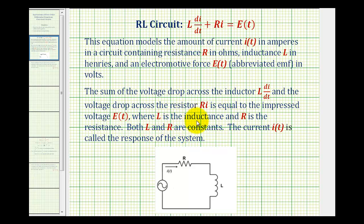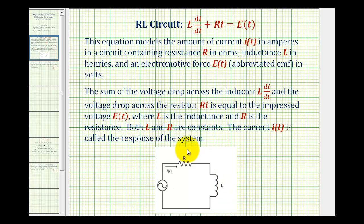Where L is the inductance and R is the resistance — both L and R are constants — and the current i of t is often called the response of the system. Here's a diagram of a basic RL circuit.